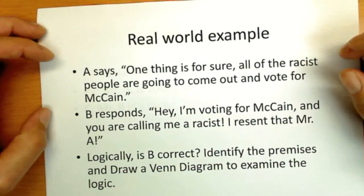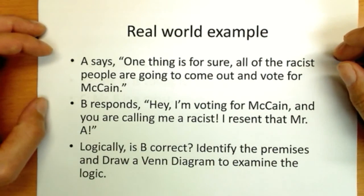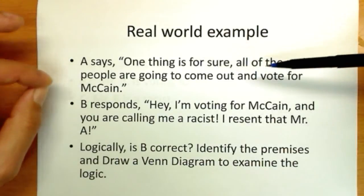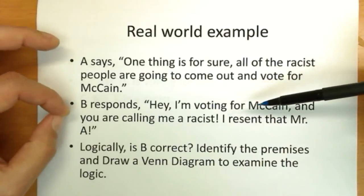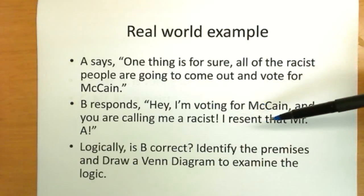Another real world example, this one I saw on a television debate during the campaigns. A says, one thing is for sure, all the racist people are going to vote for John McCain. B responds, hey I'm voting for McCain, you're calling me a racist, I resent that Mr. A. Is B correct logically? Can we identify the premises and draw a Venn diagram to examine the logic?